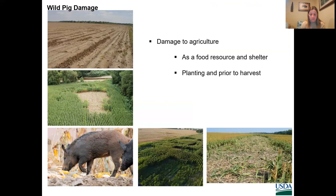Wild pig presence can also result in significant and direct financial loss to agricultural producers and landowners. Types of agricultural damage vary regionally and depend on crop type and wild pig densities. Damage occurs through direct consumption and trampling of various crops like corn, soybeans, peanuts, and sorghum, as well as through the rooting of pastures and hay fields. In a survey of 11 states in the U.S. during 2014, it was estimated that damaged corn resulted in a loss of $61.7 million.